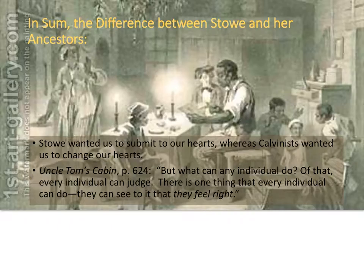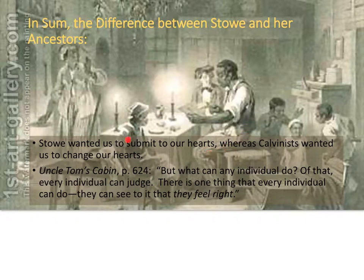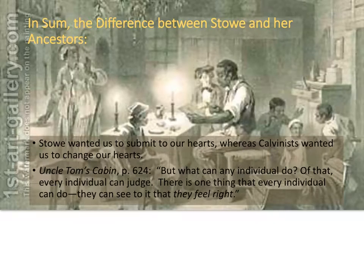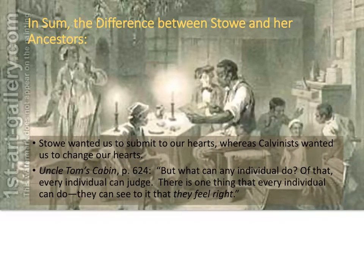In sum, the difference between Stowe and her ancestors — speaking liberally, not just of her literal father but of Lyman Beecher's legacy from Wigglesworth and the Puritans — is that Stowe wanted us to submit to our hearts, whereas Calvinists wanted to change our hearts. Uncle Tom's Cabin says on page 624, and this is one of the most famous quotations you need to memorize: 'But what can any individual do? Of that, every individual can judge. There is one thing that every individual can do. They can see to it that they feel right.'